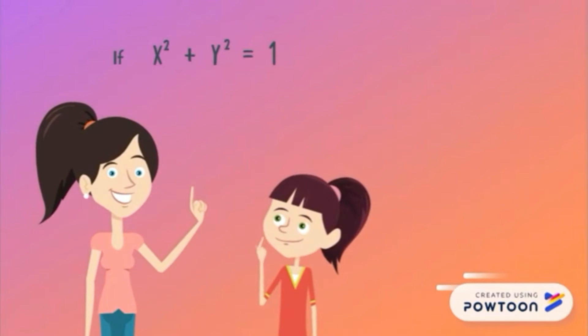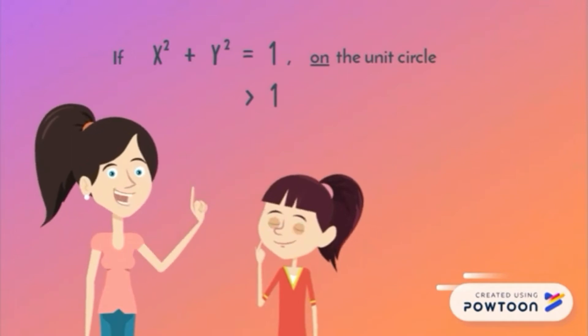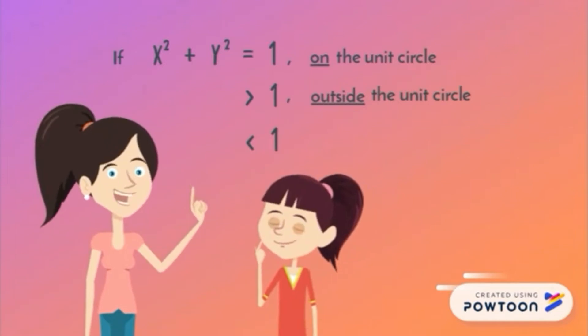If x squared plus y squared is equal to 1, then the point lies on the unit circle. If it is greater than 1, then the point lies outside the unit circle. If it is less than 1, then the point lies inside the unit circle.